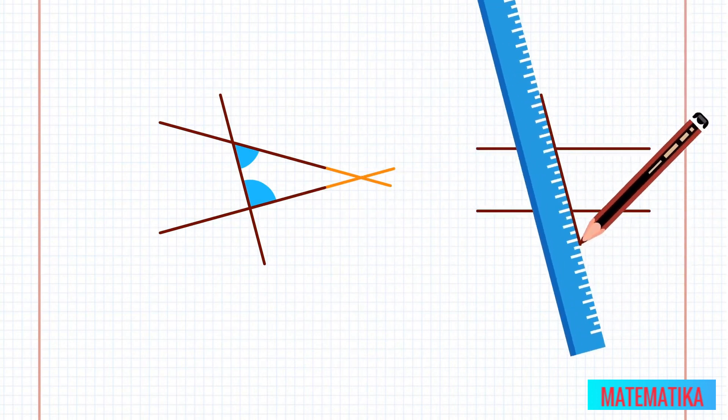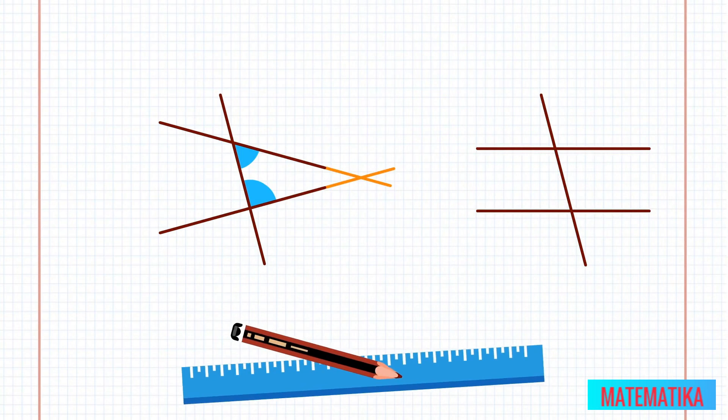When you draw in the transversal, the two same side interior angles will either be exactly 90 degrees or will be a combination of an acute and an obtuse angle.